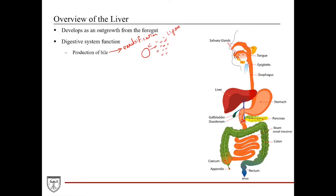Another function of the liver is to filter the blood coming from the GI tract and monitor it for the level of nutrients, toxins, and glucose. If the blood is high in toxin, the liver cells will detoxify it. If blood glucose is too high, the liver absorbs and stores glucose; if too low, the liver converts stored glycogen back into glucose and releases it into the bloodstream before draining into the inferior vena cava.